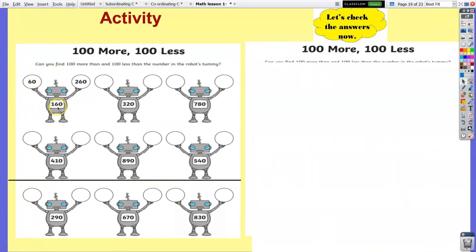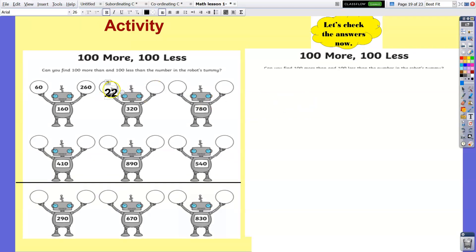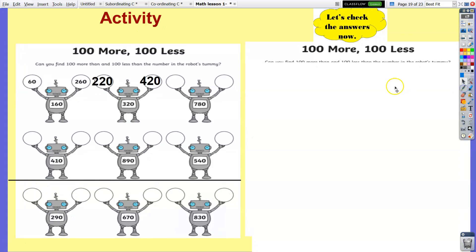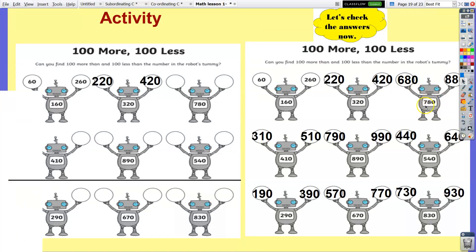Pause the video for three minutes and complete the activity. Time is up. So here are the answers: 780 less than 100 is 680, more than 100 is 880, and so on.